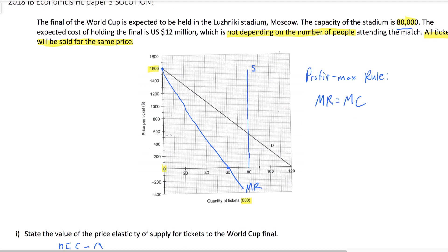Rather than drawing a marginal cost curve, we've got to think about what is the marginal cost to the organizers of selling an additional ticket. Look at the prompt again — the cost of holding the final is $12 million, which is not depending on the number of people. So whether zero people attend or 120,000 people attend, the cost to the organizers of selling one more ticket is always zero. Marginal cost is zero — it doesn't cost the stadium or organizers a single dollar to sell one more ticket. The tickets might even be electronic. So now we have all we need: the World Cup organizers should sell tickets up to the point where marginal cost equals marginal revenue, which is at 60,000 tickets.